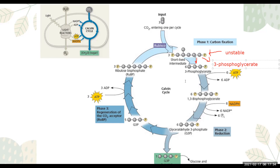To clarify: we are looking at one carbon dioxide molecule at a time. One CO2 enters the Calvin cycle, combines with one RuBP with the help of RuBisCO, forms the unstable intermediate, and splits into two 3-phosphoglycerates. Once you have the 3-phosphoglycerates, it will undergo the second phase, which is reduction.